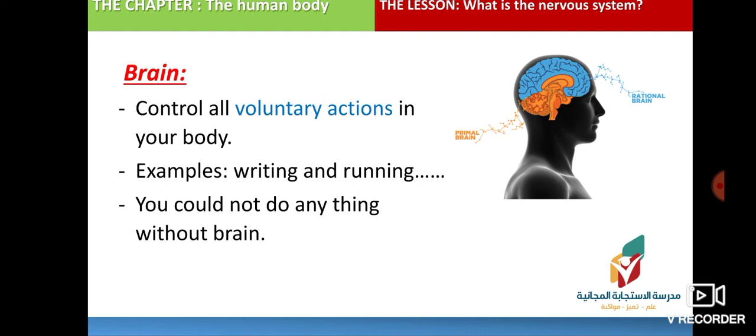Examples of voluntary actions include writing a letter, running, swimming, walking, and talking. All of these are actions that you choose to do, and your brain is responsible for them. You couldn't do anything without the brain — it allows you to read, write, play, study, watch TV, and think.